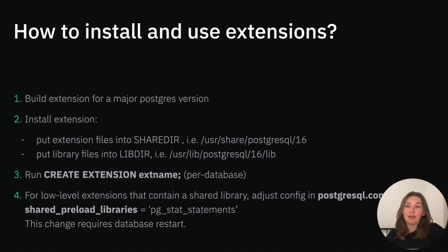How do you install and use extensions? First of all, if an extension uses the Postgres internal API, it needs to be built against the right major version. Then, to install the extension, we need to put files into sharedir and library files into libdir. These paths are platform-specific — on the slide you can see examples for Ubuntu. Then you need to connect to Postgres and run the CREATE EXTENSION command in each database. Postgres will search for extension files in those directories and run the extension installation scripts. Additionally, some low-level extensions that require access to Postgres memory or log management may require library preloading. For them, one needs to adjust the config in postgres.conf and add the library name to the shared_preload_libraries setting. This change requires a Postgres restart.